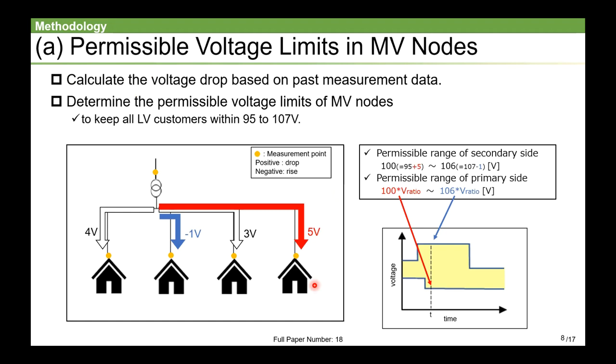Here, in step A, the permissible voltage range of MV nodes is determined. First, the voltage drop is calculated from the measurement voltage on the primary side of the pole transformer and each LV consumer. Then, the permissible voltage range of the primary side is determined so that all LV consumers' voltage can be within 95 to 107V.